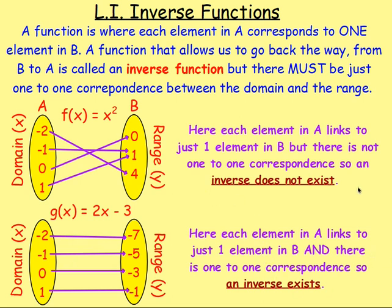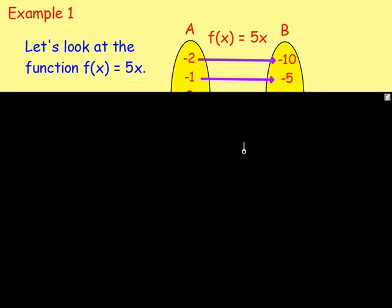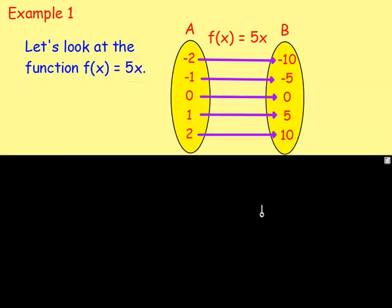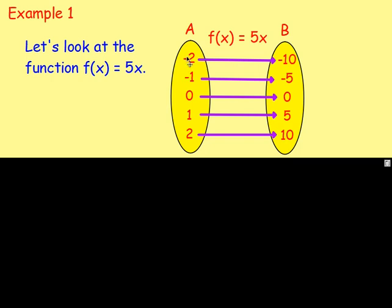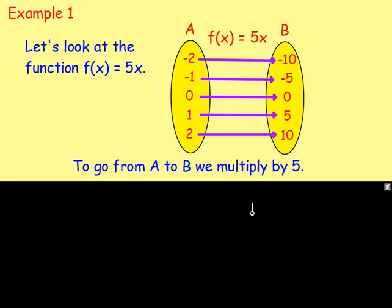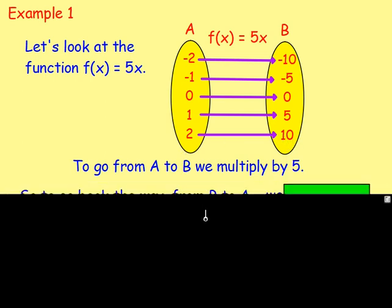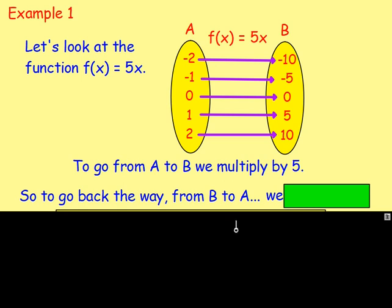So what is meant by going back the way — how would you do that? Well, let's look at the function f of x equals 5x. We've got different elements in A; if you multiply them by five, then you would get your range. So to go from A to B, we'd multiply by five. But how would you go back the way from B to A? Let's ask somebody in Mr. Griffin's class.